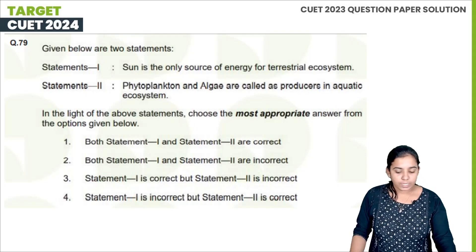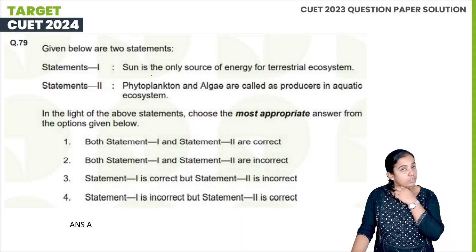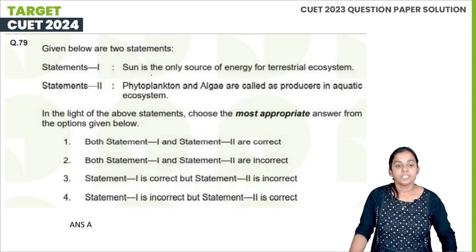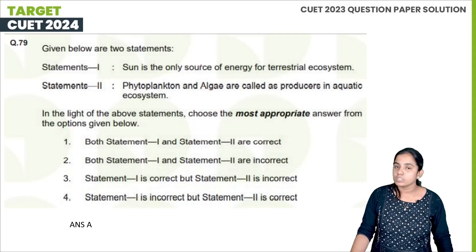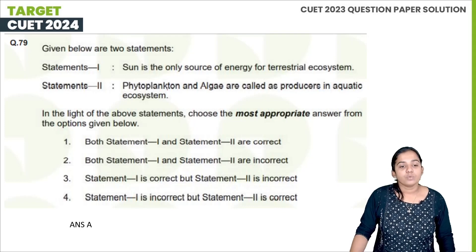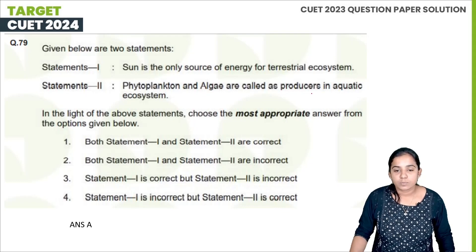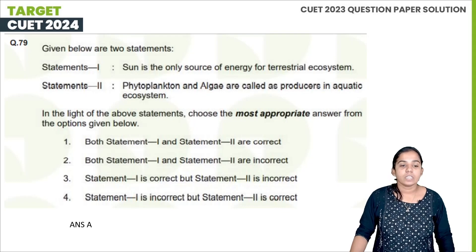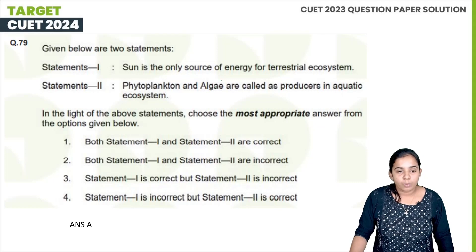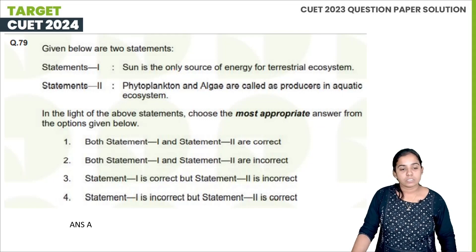The factual statement written by science and pedagogy: the sun is the only source of energy. Phytoplankton and algae are called producers in an aquatic ecosystem.